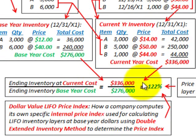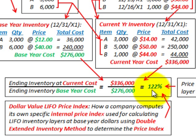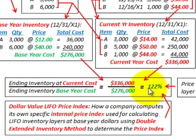Now we calculate the price index for the year. Our ending inventory at current cost is $336,000, and our ending inventory at base year cost is $276,000. Dividing $336,000 by $276,000 gives us a price index of 122%. This is our internally generated price index, which we use for pricing our inventory layer. Any inventory layer for year X1 uses this price index ratio of 122%.